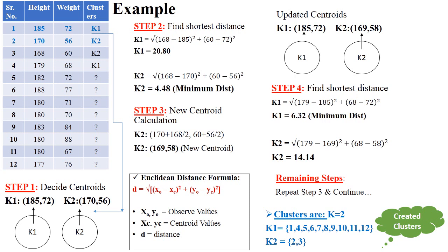To summarize how K-means clustering works: first, identify the number of clusters; second, identify the centroids; third, compare the distance between each centroid — whatever the minimum distance, add that particular data into that cluster; and again update the centroids. Repeat this step until the end. In this way, K-means clustering works.